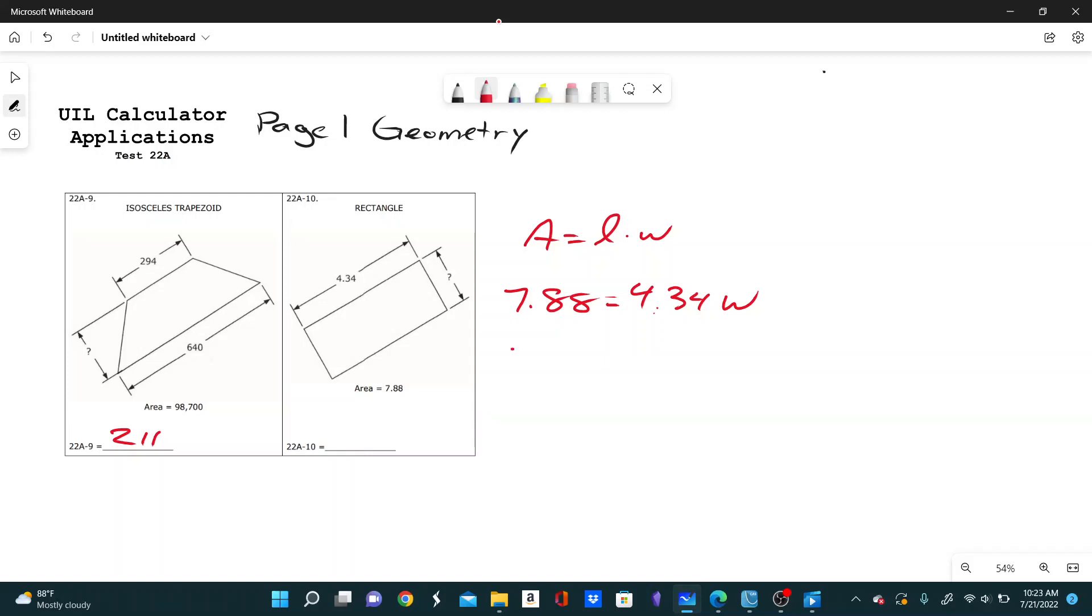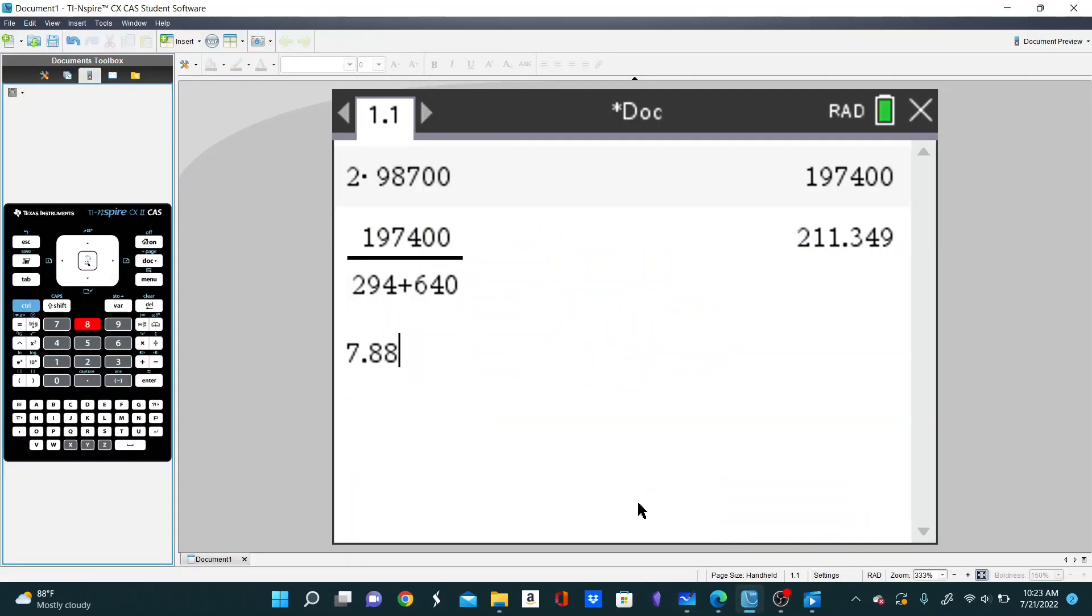And so to solve for w, it's just 7.88 divided by 4.34. And let's see what that is. 7.88 divided by 4.34. And we get, rounding to three sig figs, that's going to be 1.82.